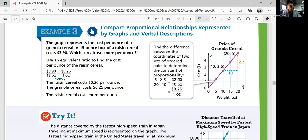And you can represent that using graph. So 1, 0.25, 2, 0.5, 3, 0.75, and then 4, 1, 5, 1.25 and so on. So every ounce would be $0.26, right? So the raisin cereal will be $0.26 per ounce. The granola cereal is $0.25 per ounce.